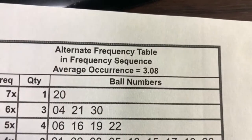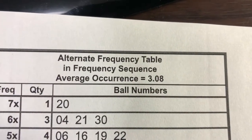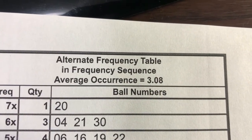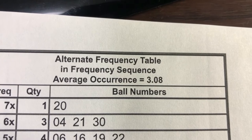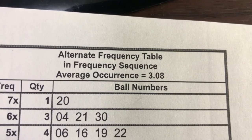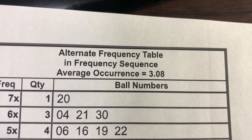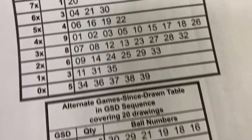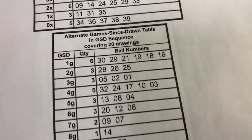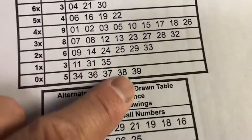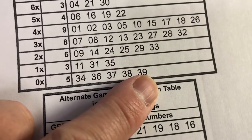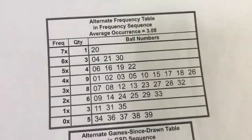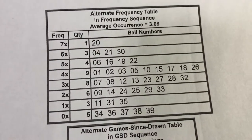This is what you're supposed to have: the Alternate Frequency Table in Frequency Sequence. Average occurrence equals 3.08. You're going to cross out 38 and 39 because Lotto7 only goes up to 37.